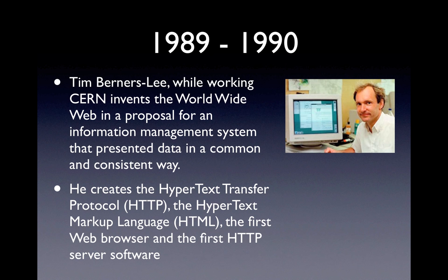So that covers the physical section — the network infrastructure. Before the advent of the World Wide Web we had the internet, which is the physical cables connecting computers around the country and then around the world. The first international connection was between a research place in England — the same place Alan Turing was from — and the American mainland. Around 1989 to 1990, with that network infrastructure in place, Tim Berners-Lee, while working at CERN, basically invented the World Wide Web in a proposal for an information management system that presented data in a common and consistent way.